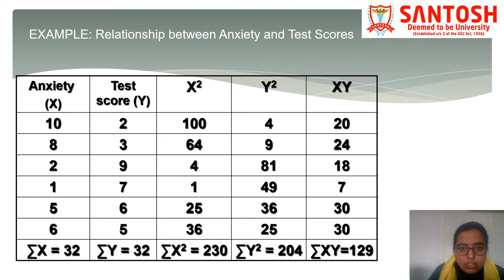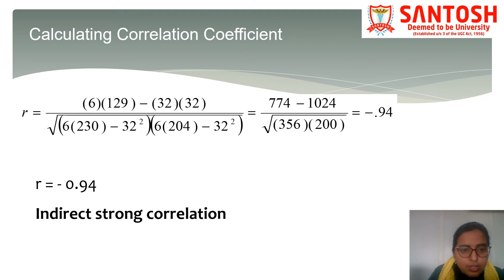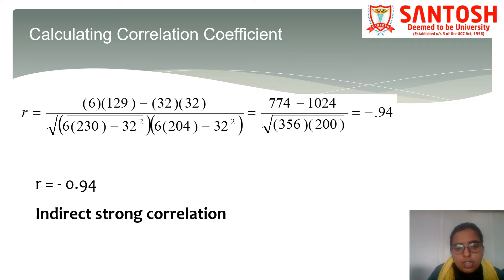Similarly, in the second example on the relationship between anxiety and test scores, the same columns are calculated. After substituting the values in the formula, the value of correlation coefficient comes out to be minus 0.94, which indicates a strong negative correlation between anxiety and test scores. The test scores are considered the dependent variable, while anxiety scores are considered the independent variable.